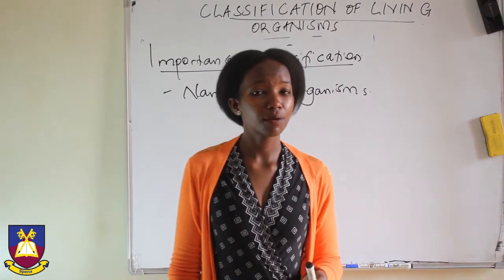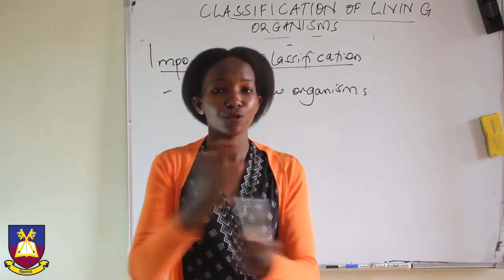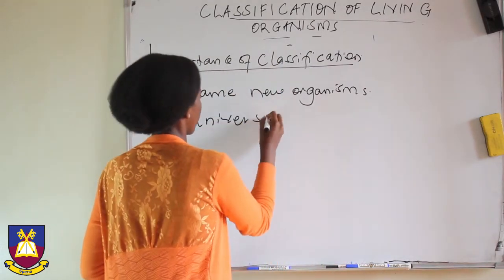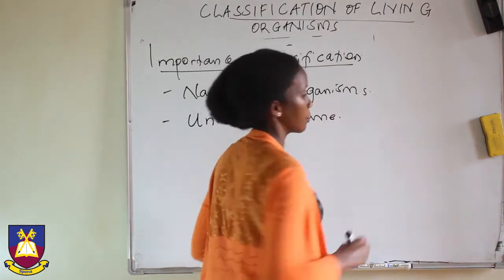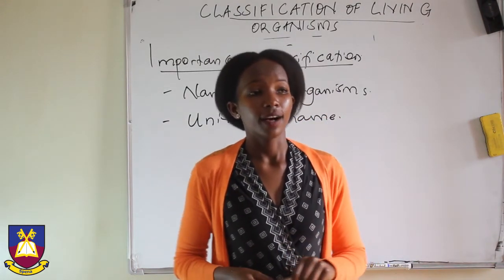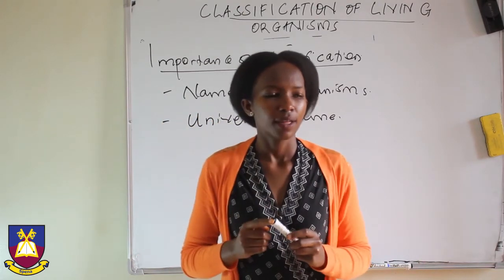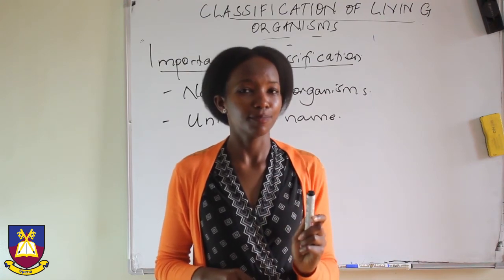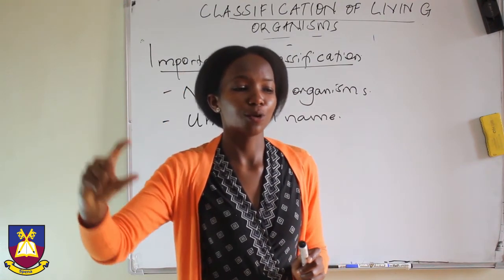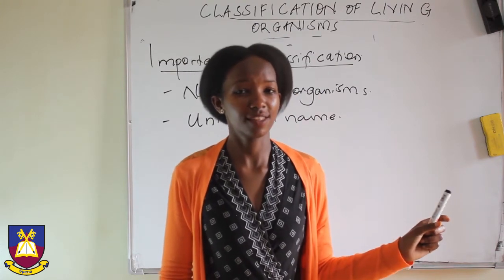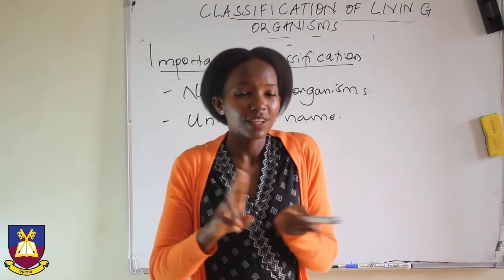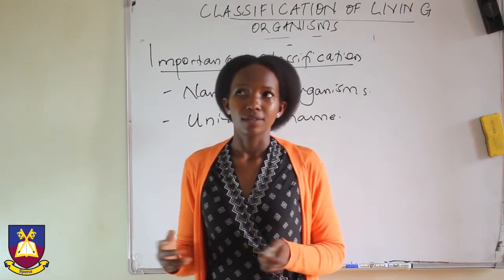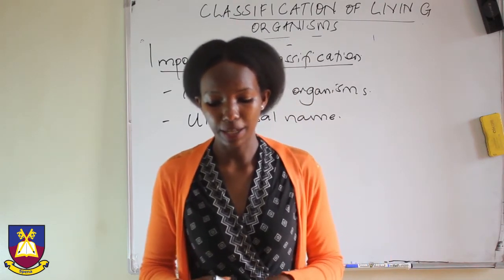Number two: the use of scientific names prevents confusion among scientists. We can have a universal name. If I am in Uganda and I am talking about Felis leo, the person in Brazil will understand that I am talking about the lion, even though we do not understand each other's local language. Universality comes because we use the same scientific name.